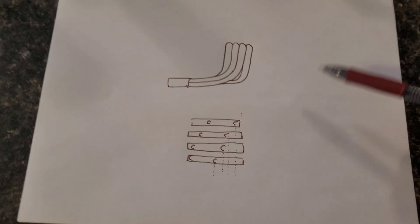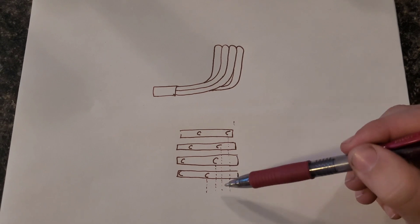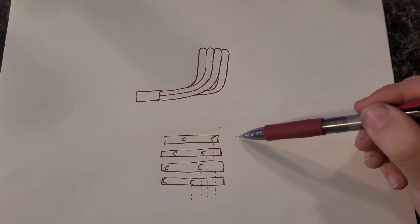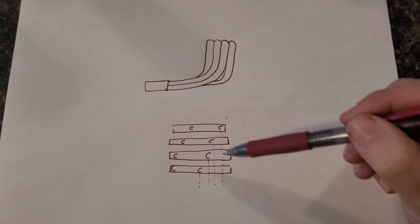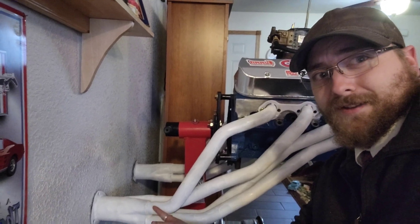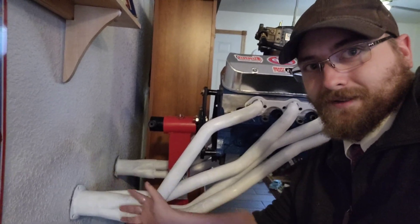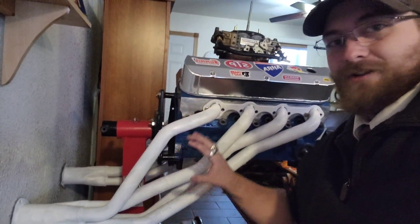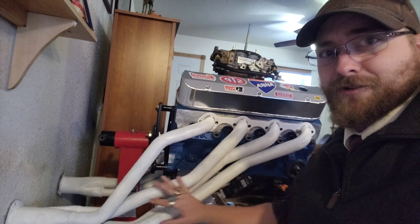They want them staggered so each pulse gets to the collector end at a different time to help draw out all the rest of them. And that's why collectors are so important on your headers and having the right length collector to actually help all the scavenging happen.